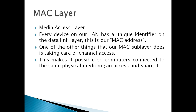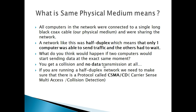Channel access makes it possible so computers connected to the same physical medium can access and share data. For example, if you have two or three computers connected to the same coaxial cable, this type of physical medium connection is what we call half duplex. In this mode, only one computer can send data or receive data at a time.